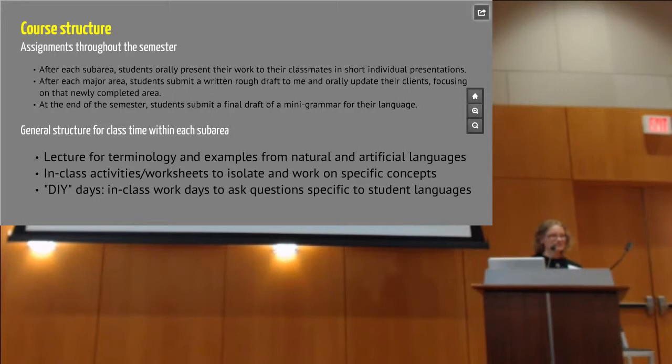And so the overall course structure is that I have three major areas. And then within those areas, I have five sub-areas. And so after each sub-area, which you're going to get to see all five of them, they orally present their work to their classmates to get feedback to say, here's where I am, where should I be going with this? And after each major area, they present the information to their clients to say, here's how I've updated the language. And they also give a written rough draft to me so that way they can get my feedback, which is, of course, the most valuable thing they ever get in life.